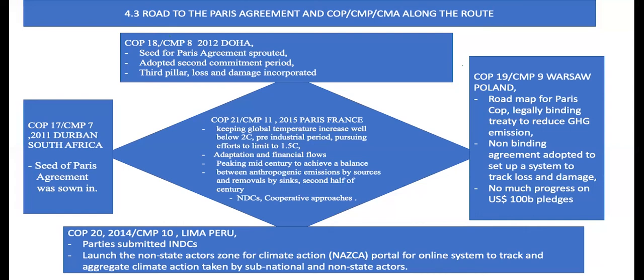Moving on to COP18 in 2012 in Doha, the seed for the Paris Agreement started sprouting. The conference adopted the second commitment period of the Kyoto Protocol, which was from 2013 to 2020. For the first time, the third pillar in the climate change process — loss and damage — was incorporated. From there, there are now three pillars in the climate change process: mitigation, adaptation, and loss and damage.